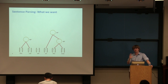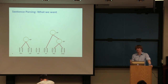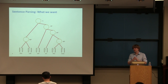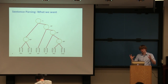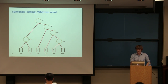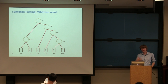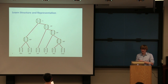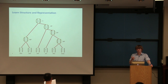Grammar doesn't tell you that much about semantics — you can have grammatically correct sentences that make no semantic sense. We want not just discrete structures but vector representations of each subphrase without context. The first question we must ask is whether we really need these structures, since recurrent networks also learn a kind of structure — it just always represents everything to the left of the current word.